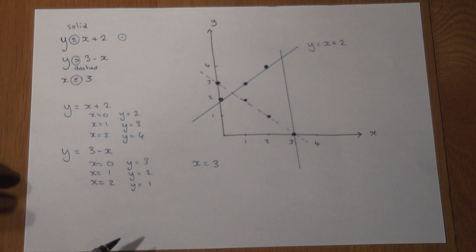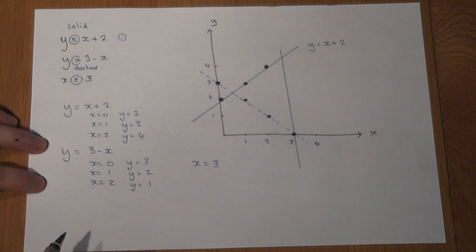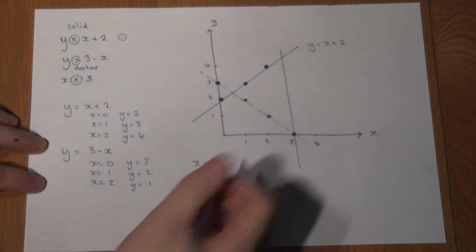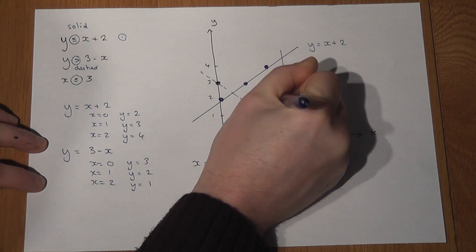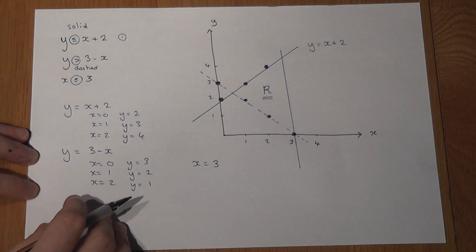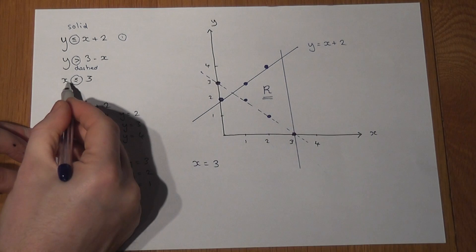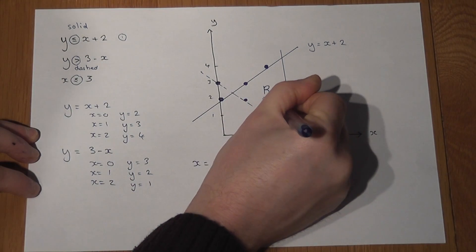Now in this question there's a region which will satisfy all of those lines. And it's this region right in the centre which I can put an R in to represent. The reason being is that x is less than 3.